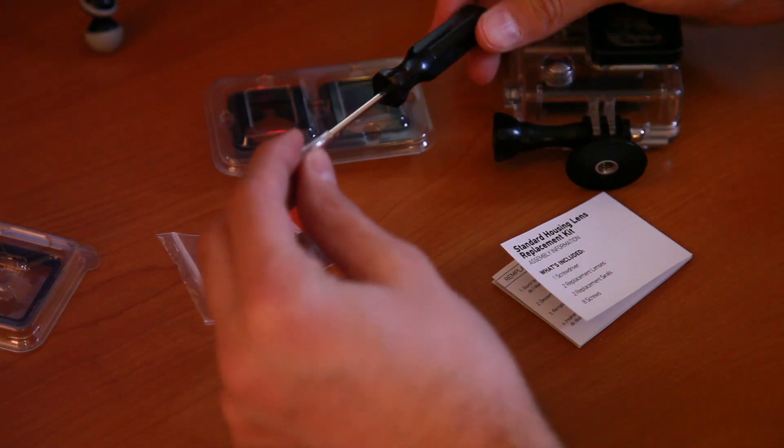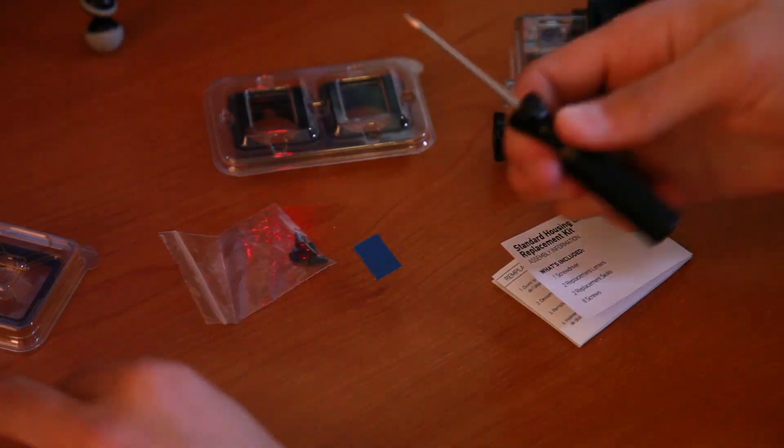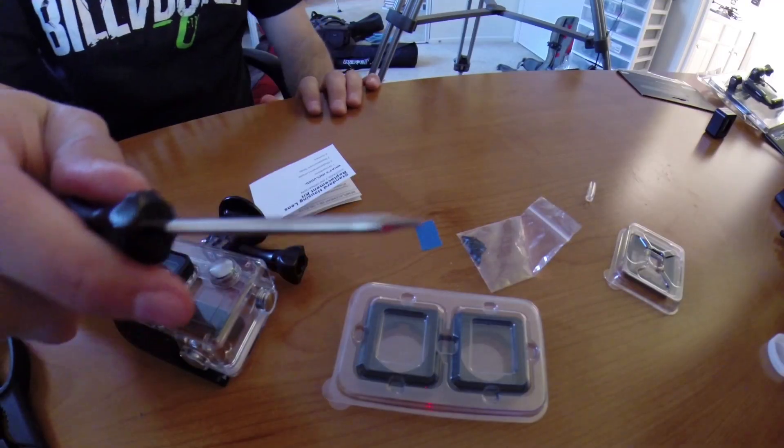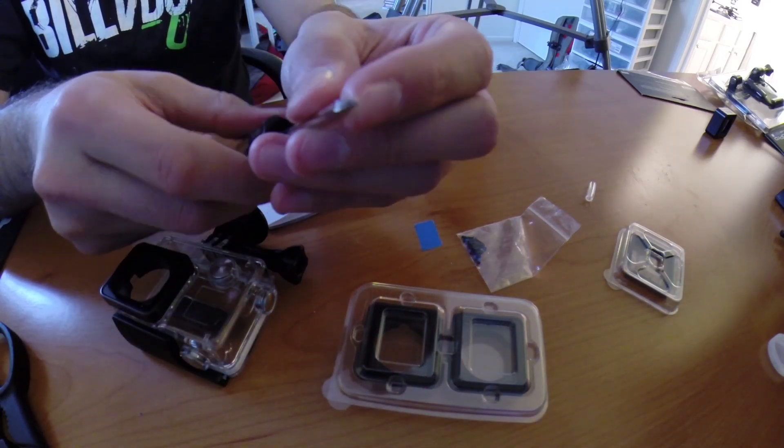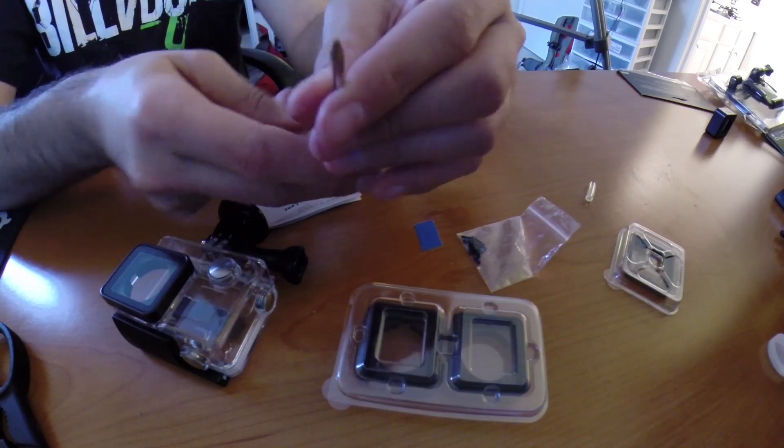I think it's called a torque wrench but it's a special wrench. I don't know if you can see it right there. It's kind of like a hexagon shape, like a star shape, something like that. It's very small.